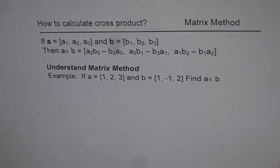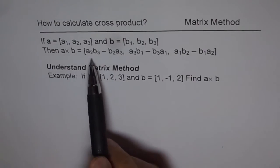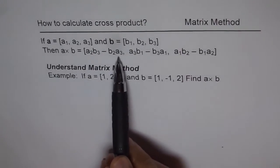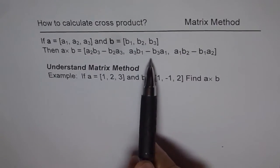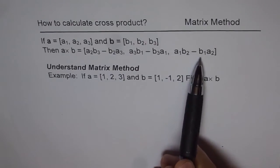How to calculate cross product? If A equals A1, A2, A3 and B equals B1, B2, B3, then A cross B is A2B3 minus B2A3, A3B1 minus B3A1, and A1B2 minus B1A2.